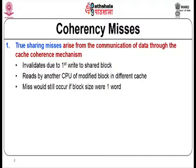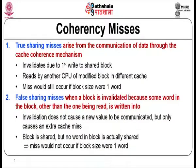A true sharing miss arises from the communication of data through the cache coherence mechanism — for example, due to invalidates from the first write to a shared block. If another processor wants to read that modified block, it will encounter a cache miss. The miss would still occur even if the block size were 1 word, since the word itself has been modified by another processor.